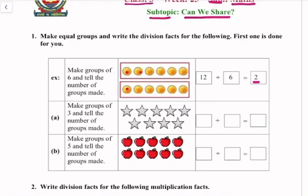First of all, we will count the number of stars: 1, 2, 3, 4, 5, 6, 7, 8, 9. We will write 9 here, and we will divide 9 by 3 because we have to make three groups. The answer is 3. The total number of groups are 3. Now make groups of 5 and tell the number of groups made.